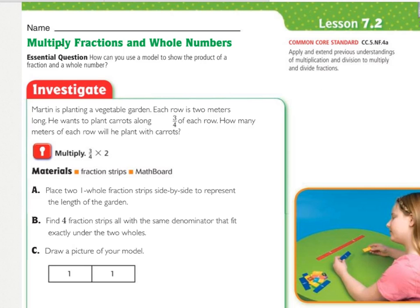Investigation. Martin is planting a vegetable garden. Each row is 2 meters long. He wants to plant carrots along 3 fourths of each row. How many meters of each row will he plant with carrots? Press pause, underline what you're being asked to find, and circle the important information.